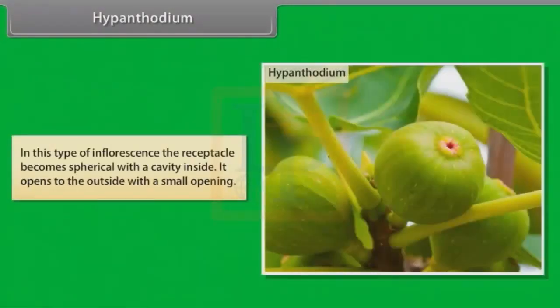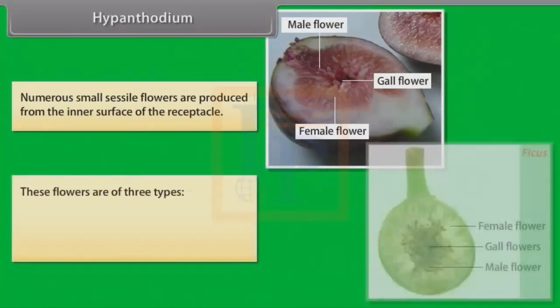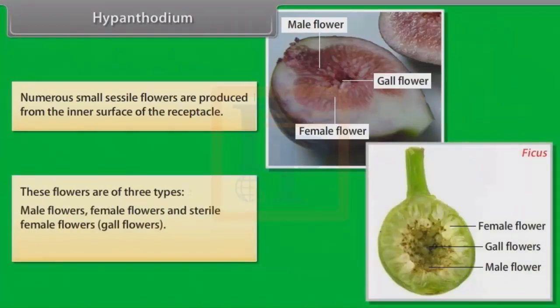In Hypanthodium, the receptacle becomes spherical with a cavity inside. It opens to the outside with a small opening. Numerous small sessile flowers are produced from the inner surface of the receptacle. These flowers are of three types: male flowers, female flowers, and sterile female flowers (gall flowers). Example: Ficus.